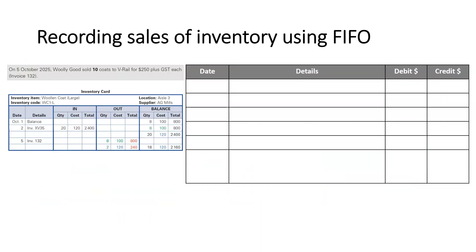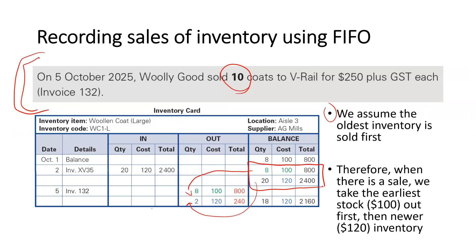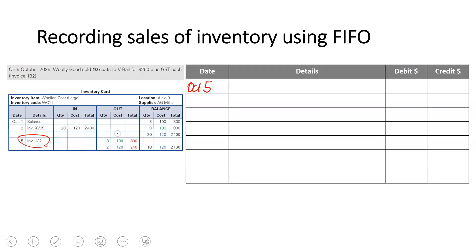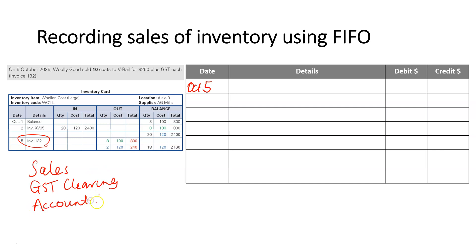So what does this look like in the general journal? On October 5th, we use the same accounts as always — it's an invoice to V-Rail. We're going to have sales, GST clearing, and an account receivable for V-Rail. We're also going to have cost of sales and inventory.